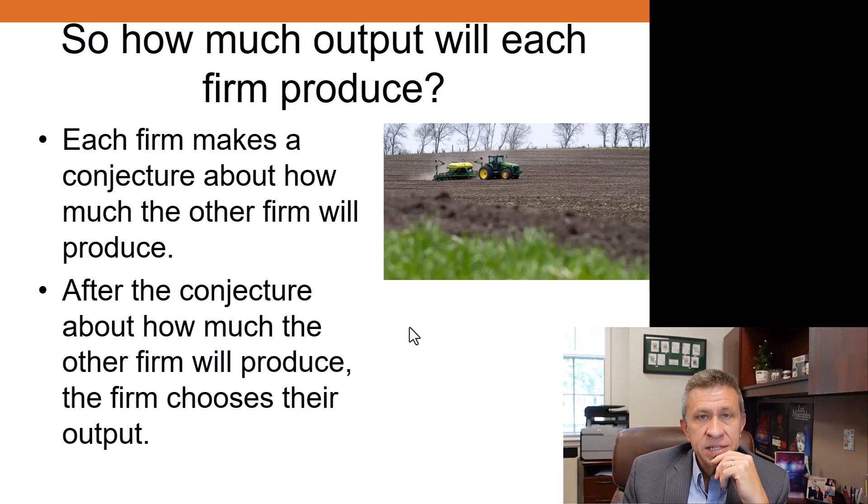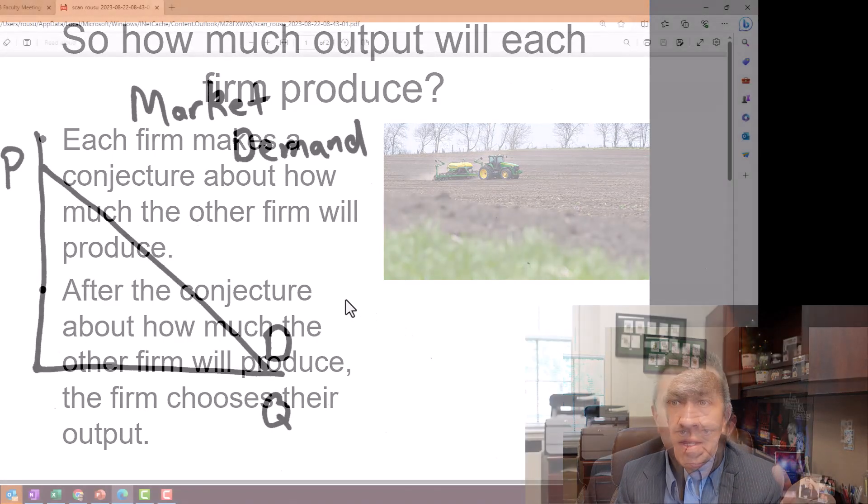These are market decisions where nobody has an incentive to have made a change from their specific action. So a Cournot-Nash equilibrium occurs in the duopoly where each firm is making a quantity decision. And then based on what the other firm is doing—we're talking duopoly—neither firm has an incentive to change their particular choice.